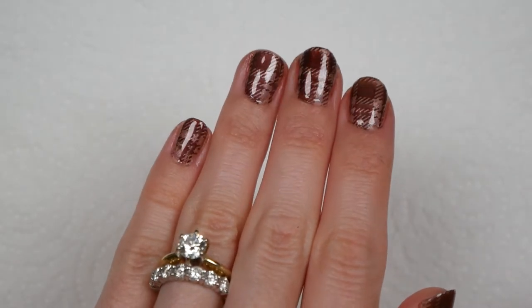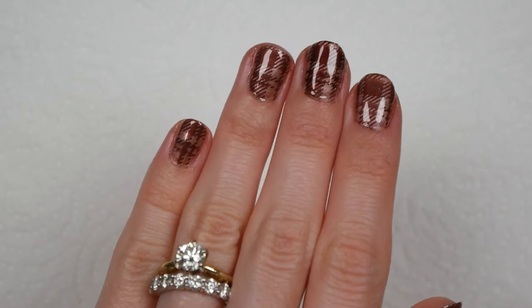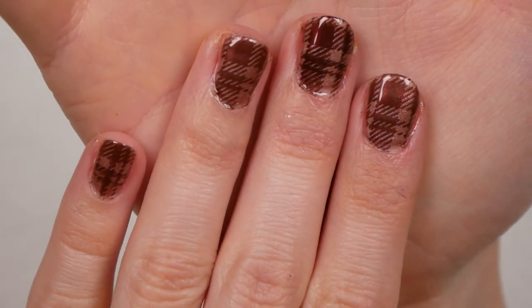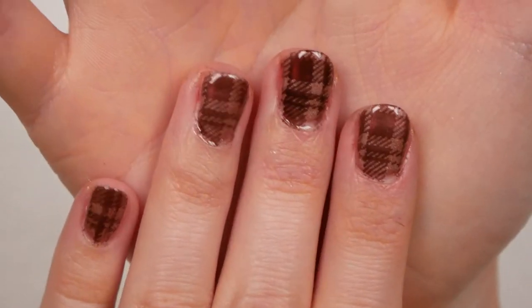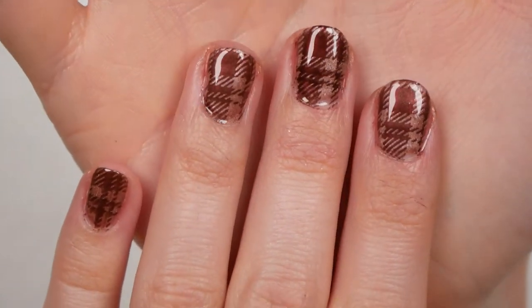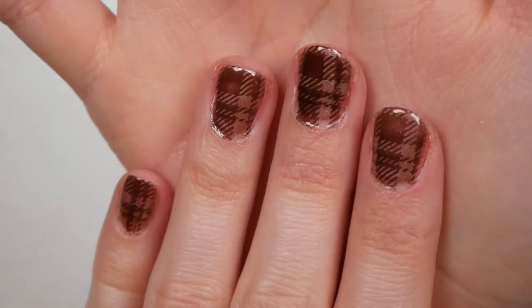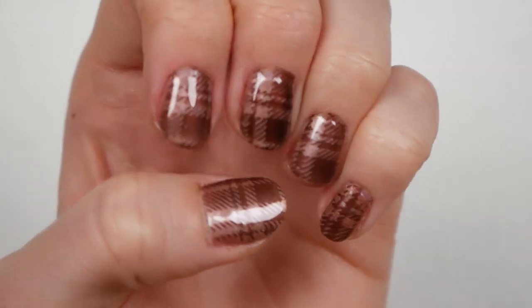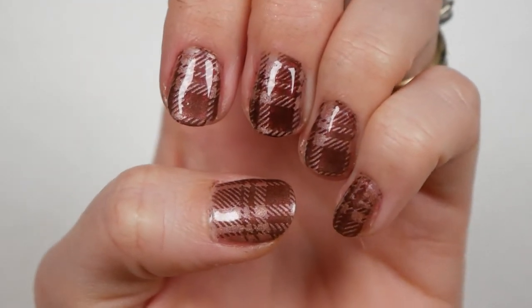I try to place the same portion of the pattern in the same location on each nail. So for instance, in the top left of the nail, I have this large kind of dark portion in the same spot. That way it just looks a little bit more cohesive. And there we go. I think these turned out beautiful.